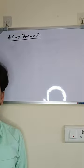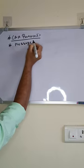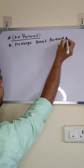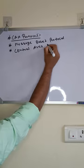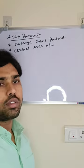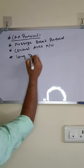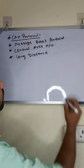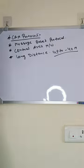CAN communicates from receiver to transmitter and transmitter to receiver. CAN stands for Controller Area Network. It is also a long distance protocol — we can transmit messages up to 40 meters, so it is called a long distance protocol.